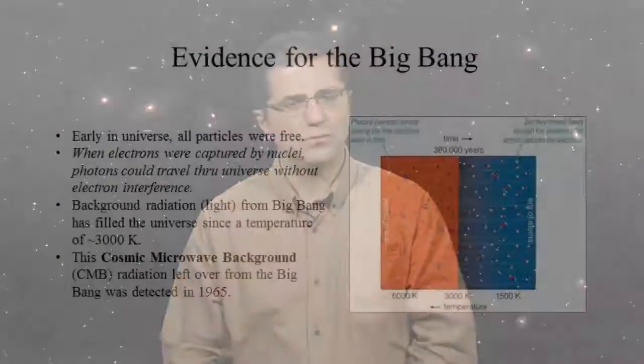Early in the universe, all particles were moving at very high velocities and were essentially free — they hadn't been captured. Electrons were interfering with photons. But when the temperature dropped enough for the nuclei to capture electrons, this opened the way for photons of light to travel straight through the universe. The universe essentially became transparent. That light has been traveling through the universe ever since. We can actually see that light that was emitted just 380,000 years after the Big Bang. Today, we call this the Cosmic Microwave Background Light, or CMB, and it was actually detected in 1965.